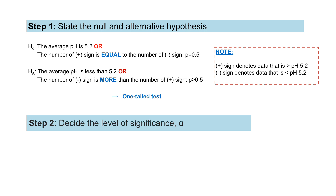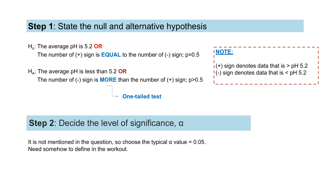The second step is to decide the level of significance, or the alpha value. Since it is not mentioned in the problem, we choose the typical alpha value of 0.05, and we need to define it in the working.